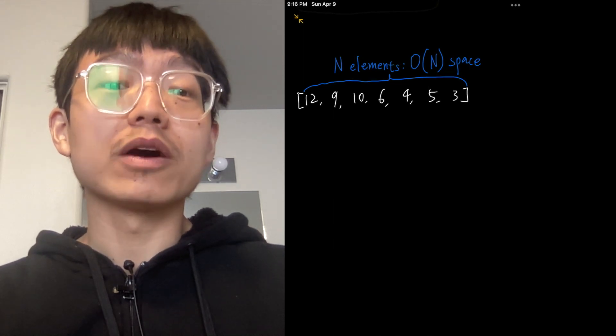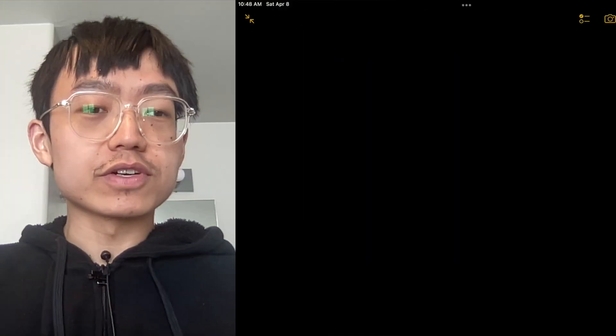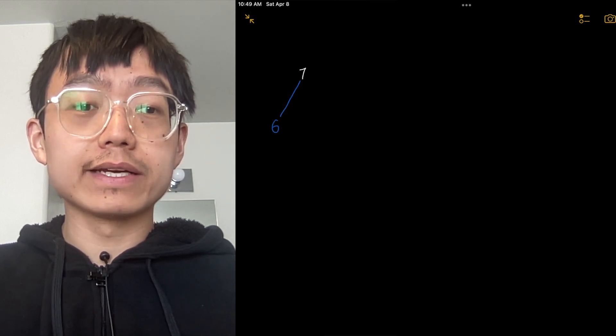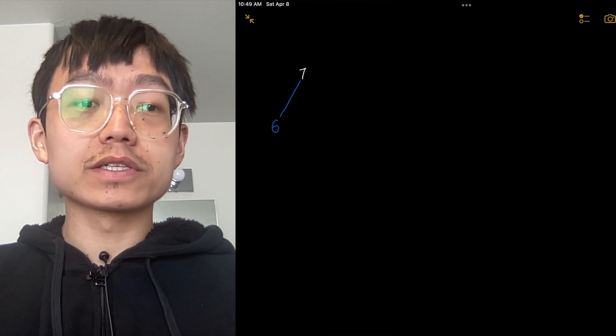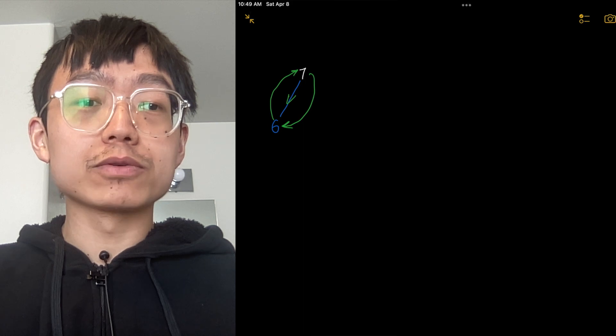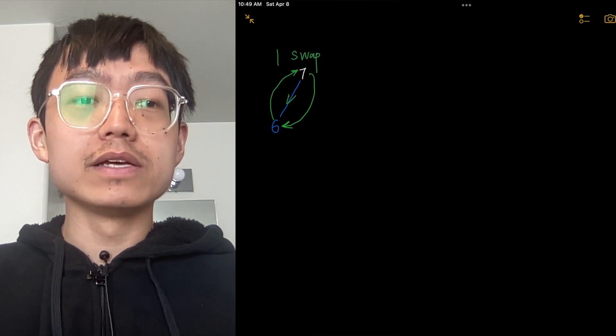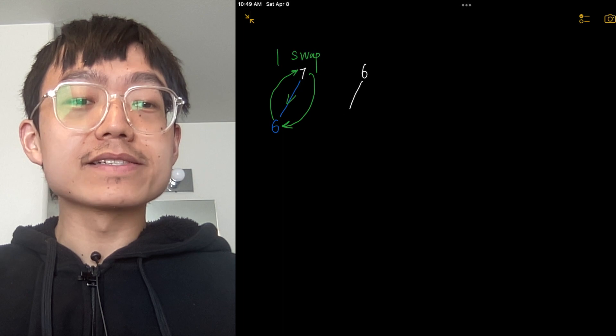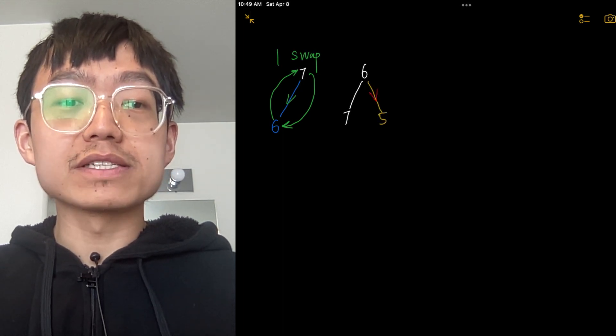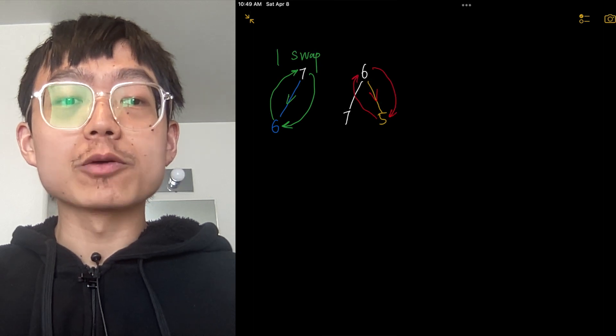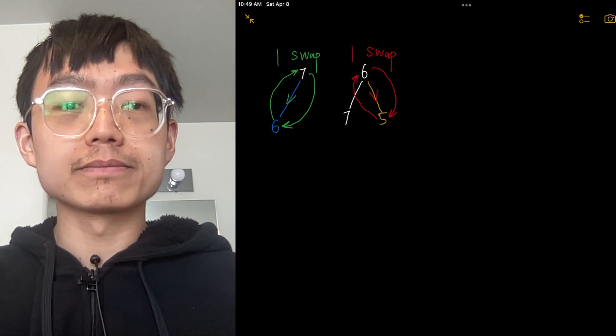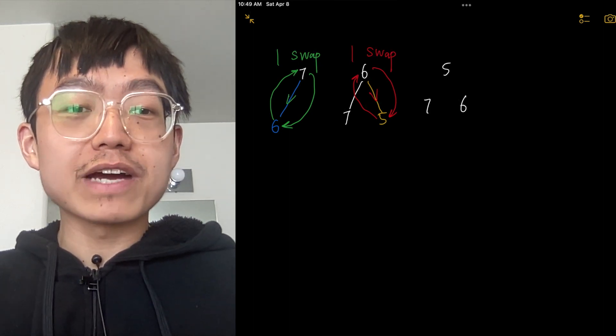So the time complexity is O(n log n). First we have 7. Because it is only one number, we don't have to do anything with it. Then we want to insert element 6. Because 6 is less than 7, we have to swap 6 and 7. So it is one time swap. 6 and 7 is a minimal heap. Then let's insert element 5. Because 5 is less than 6 and 7, we have to swap 5 and 6, which is also a one-time swap. So we have a minimal heap which is 5, 7, 6.